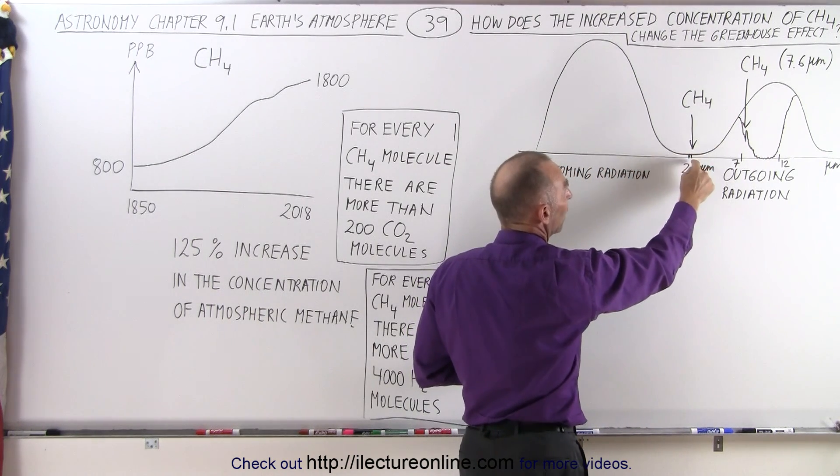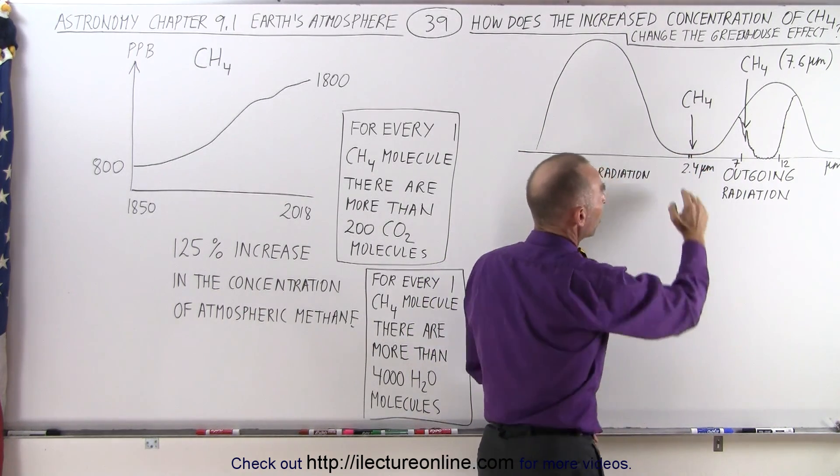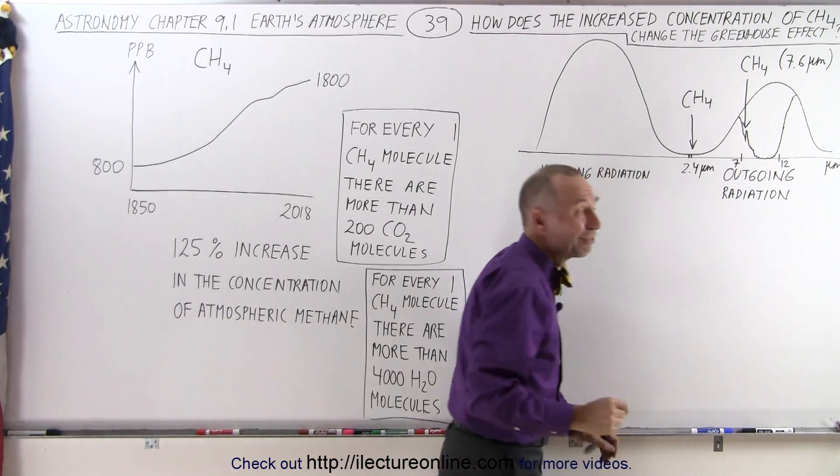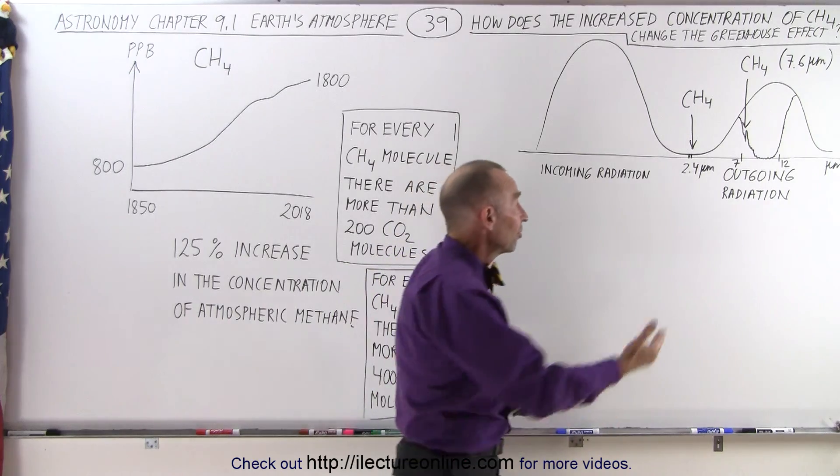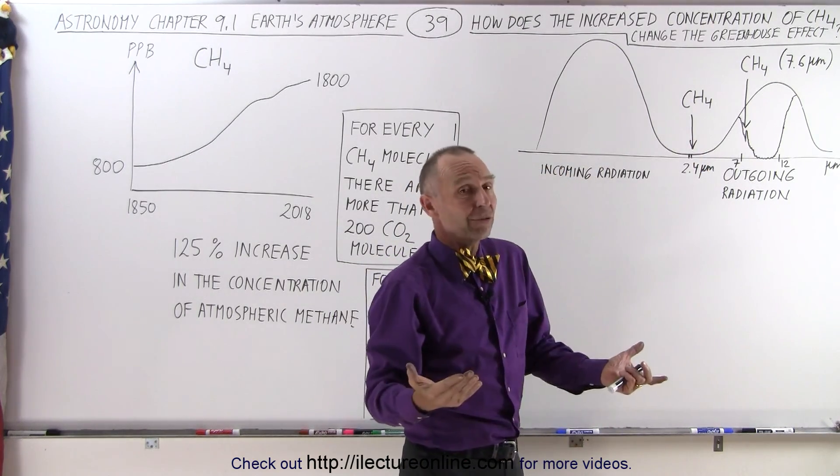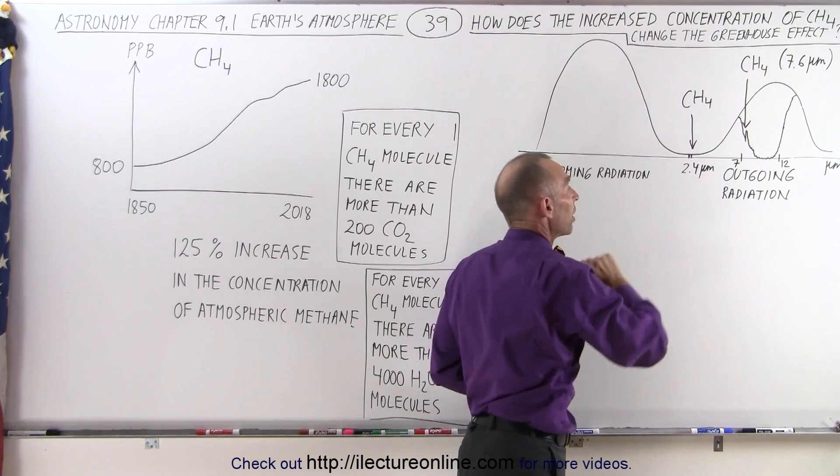Then when we look at this region right here at 2.4 micrometers, there's so little radiation being sent off the surface of the Earth at that particular wavelength, that even if all of it is held back, which in this case it almost is, then we really don't have to worry about it because it's such a very small amount.